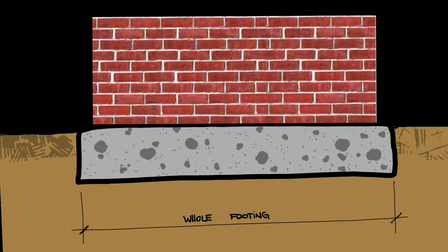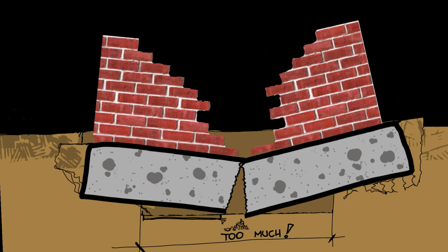At any given time, the existing footings should never be suspended more than one-third of any length in any section. This animation shows what happens when you don't follow these rules and try to do too much at once.